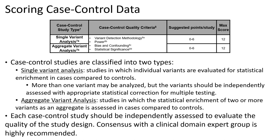When we refer to case control data for the purposes of this framework, we're referring to those studies in which statistical analysis is used to evaluate variation in cases compared to controls. Case control studies are classified into two types: single variant analysis studies, in which individual variants are evaluated for statistical enrichment in cases compared to controls; and aggregate variant analysis studies, in which the statistical enrichment of two or more variants as a group is assessed. Points for case control studies are assigned based on the overall quality of each study, considering factors such as variant detection methodology, power, bias and confounding, and statistical significance.